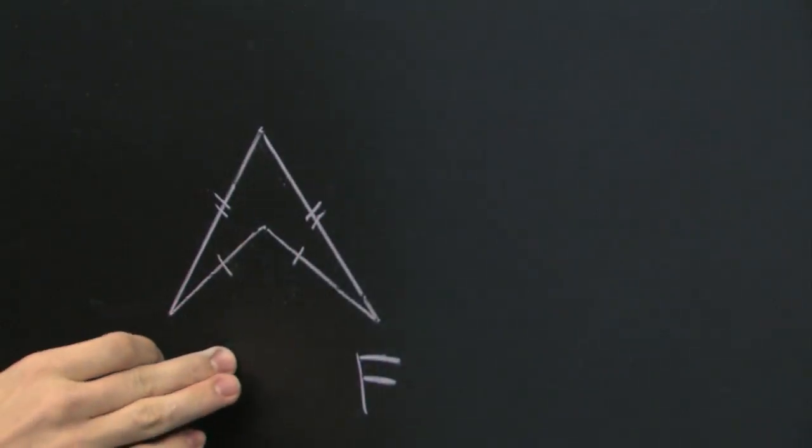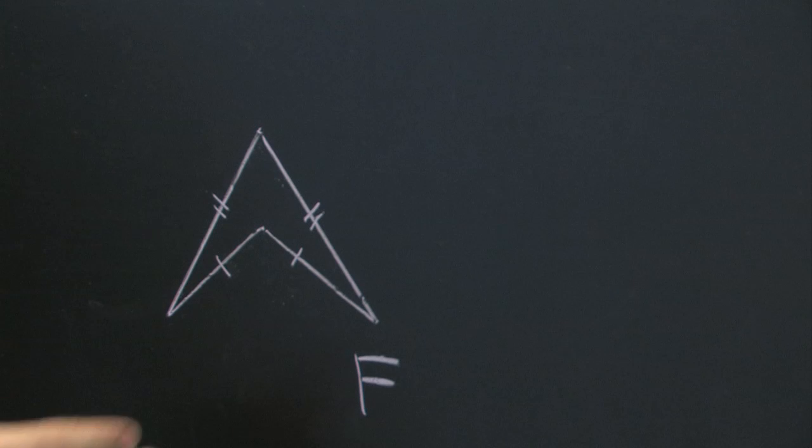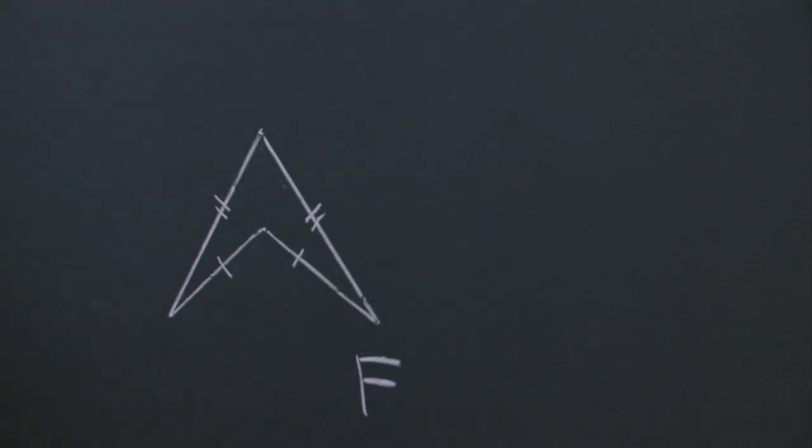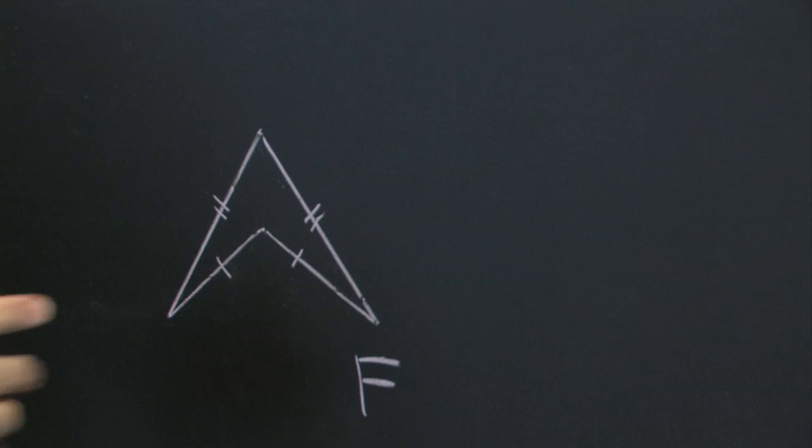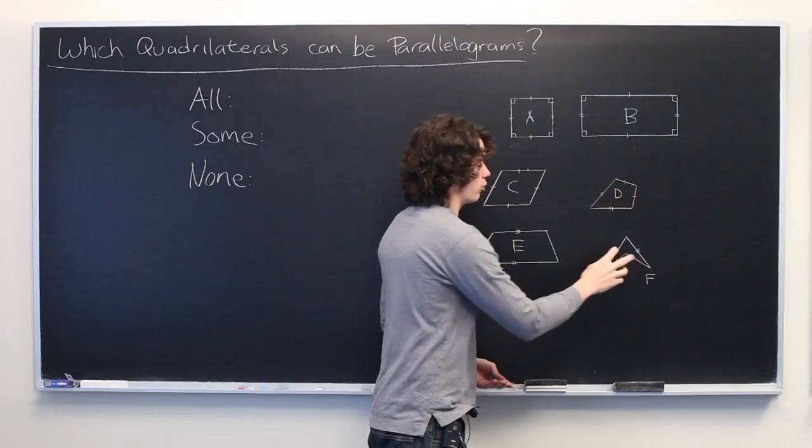And finally, the chevron, similar to the kite, in that adjacent sides are of the same length, but there is at least one interior angle that is more than 180 degrees.